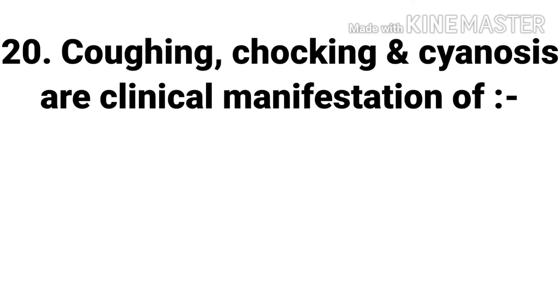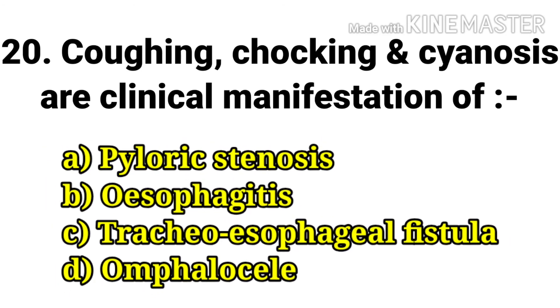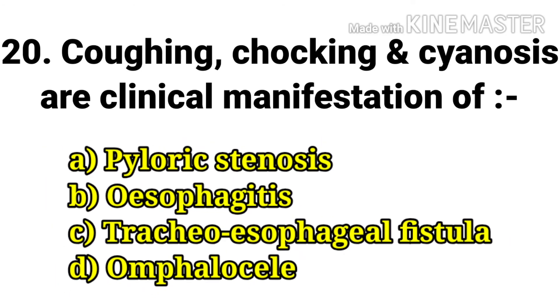The next question: coughing, choking, and cyanosis are clinical manifestations of — options are pyloric stenosis, esophagitis, tracheoesophageal fistula, and omphalocele. The answer is tracheoesophageal fistula.